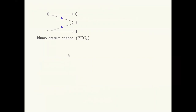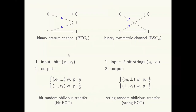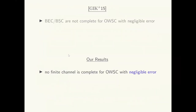Before we venture forth, let me describe some of the channels and functionalities we will encounter. A binary erasure channel with erasure probability P takes a single bit input and with probability P erases the bit, sending it through without error otherwise. A binary symmetric channel with crossover probability P also takes a single bit input and flips the bit with probability P. Both these channels are often used to model naturally occurring communication links. A random oblivious transfer functionality, or ROT for short, is a randomized version of the oblivious transfer functionality. A bit ROT channel takes a pair of bits from the sender and erases exactly one of the bits at random. A string ROT channel works the same way but with the input being a pair of strings rather than a pair of bits.